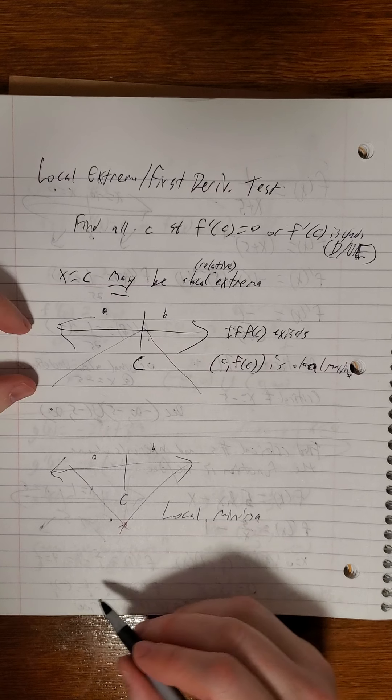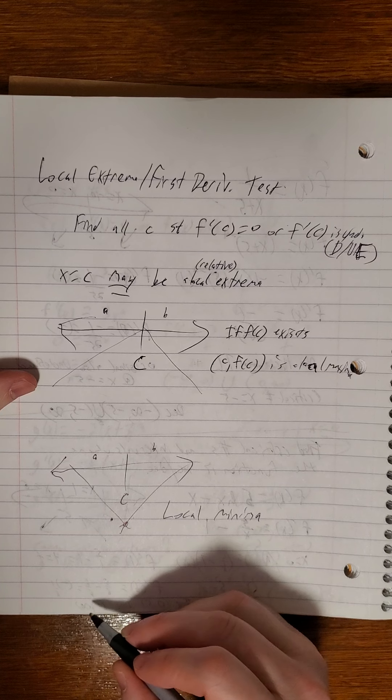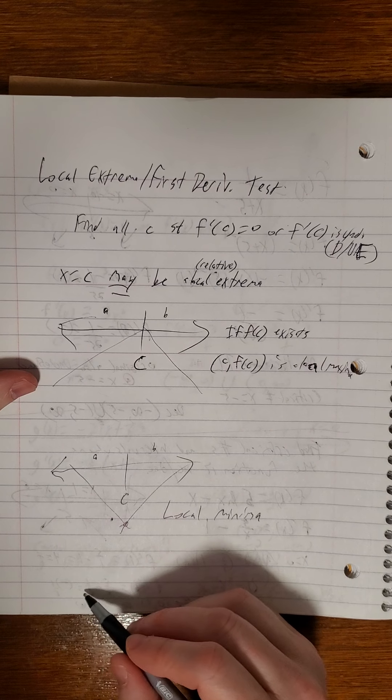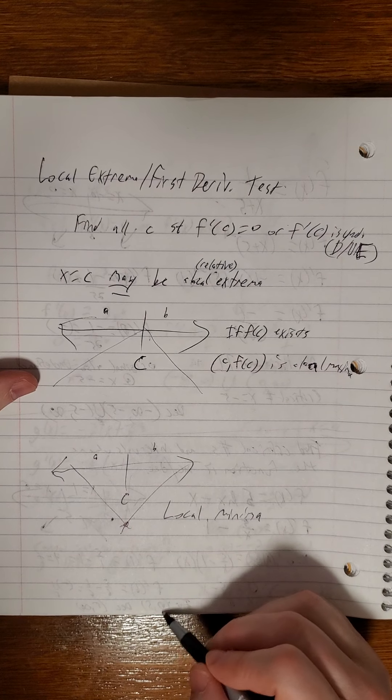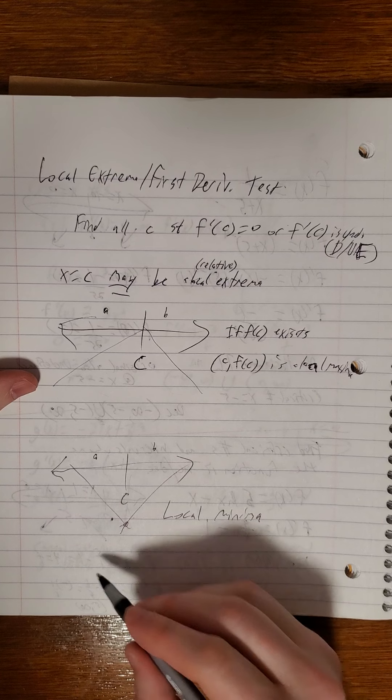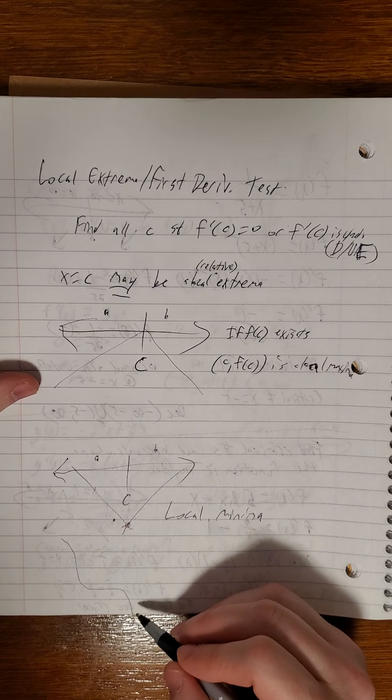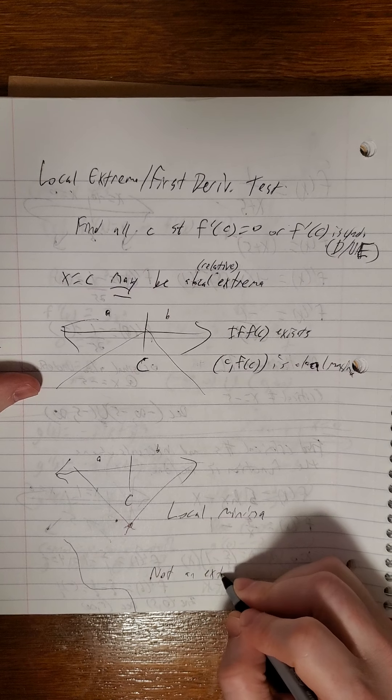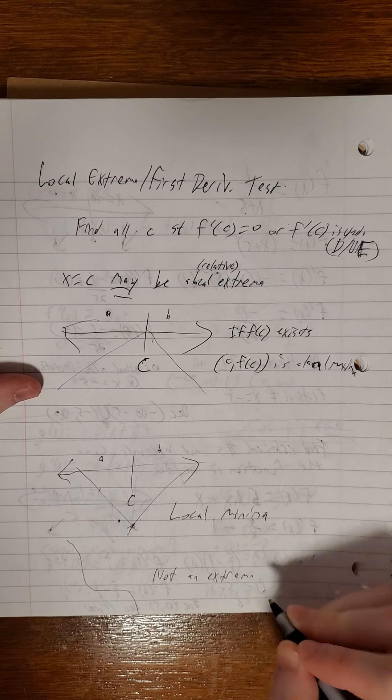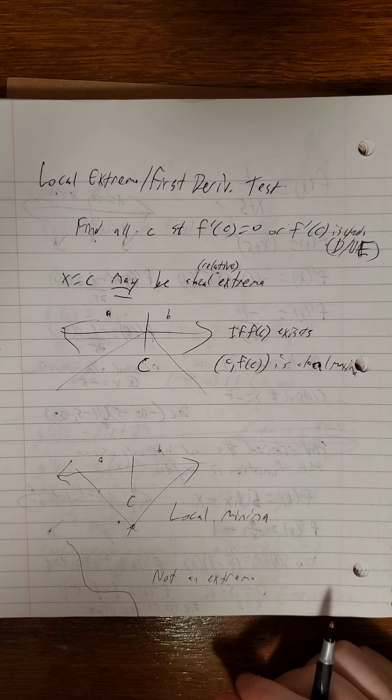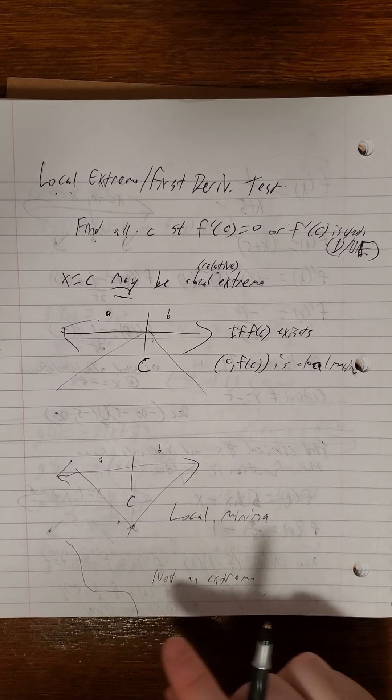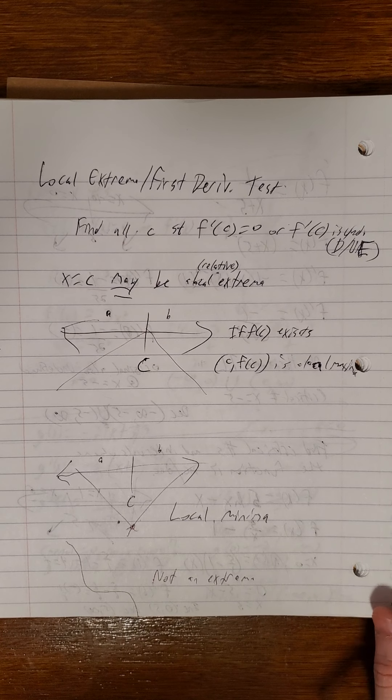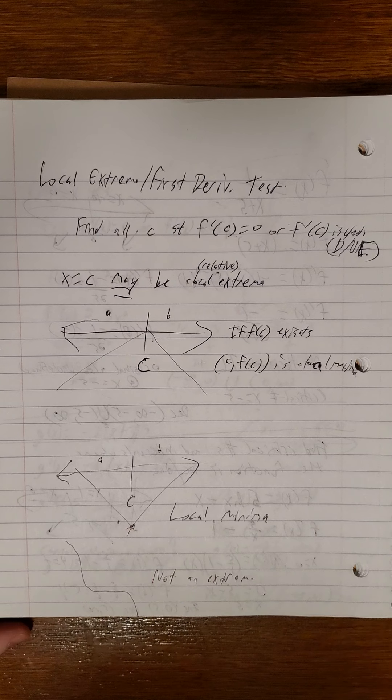But remember we do have some graphs that, we saw a couple before where either the graph just sort of levels out temporarily and drops back down. In that case that would not be an extrema. We could flip that over the other way. Also we did see some places with a vertical tangent line where we're increasing on both sides of it or decreasing on both sides of it.